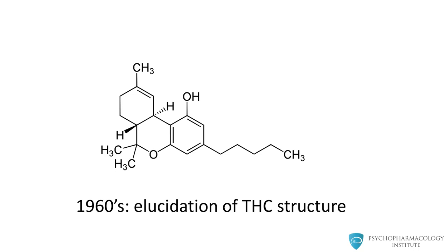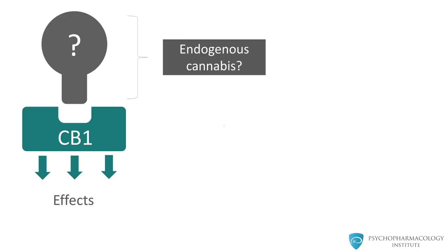Modern cannabinoid research stems from elucidation of the structure of THC by Raphael Mishulam and colleagues in the 1960s. By the early 1990s the molecular biology of cannabis was worked out. There were receptors on neurons termed CB1 receptors — this is where THC was producing its effects.